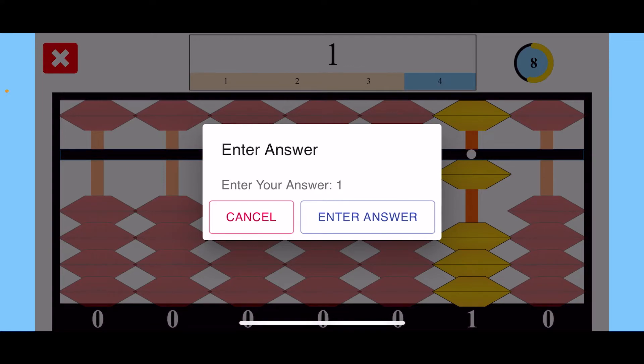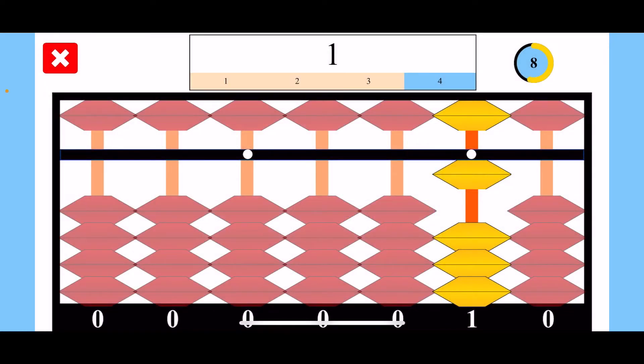If you feel like you might have made a mistake and would like to redo the problem, just click on cancel. At any time while solving a problem, if you would like to clear your abacus and start that same problem over again, all you have to do is double tap anywhere on the screen.